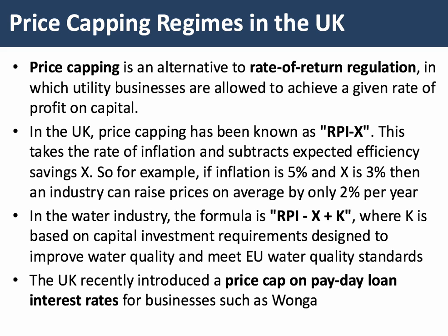Let's assume that inflation is 5% and X is 3%. Then the industry could only raise their prices on average by inflation minus X — 5% minus 3%.